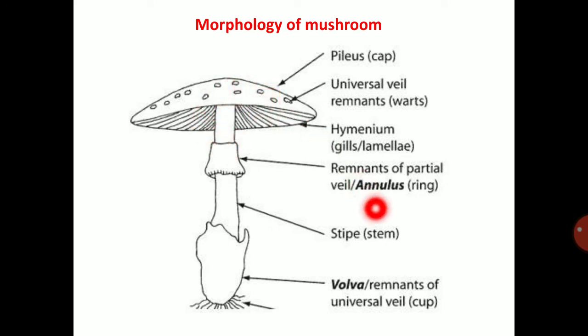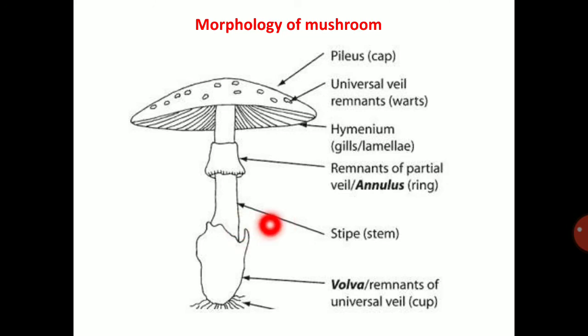The volva is present at the base of the mushroom to hold the stem, and is mostly present in poisonous mushrooms.